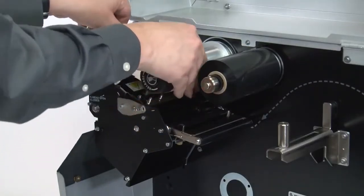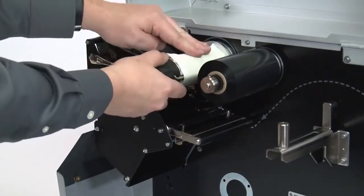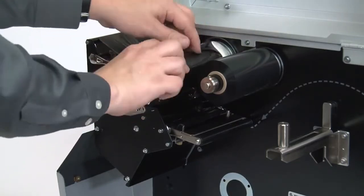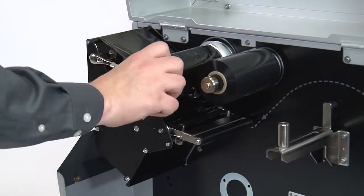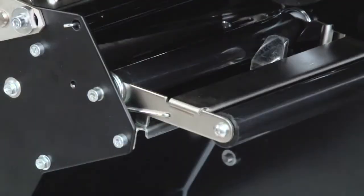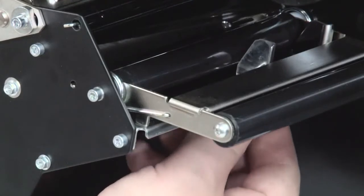Wind the ribbon leader and attach the ribbon counterclockwise around the ribbon take-up spindle. Turn the spindle to remove any ribbon slack. Loosen the thumb screw that's located on the bottom of the outer media guide and slide it all the way out.